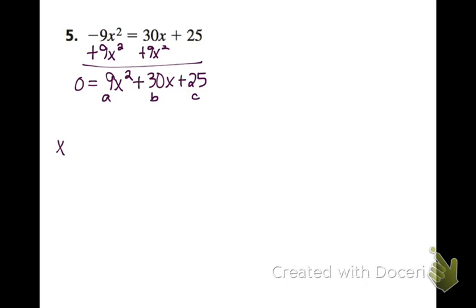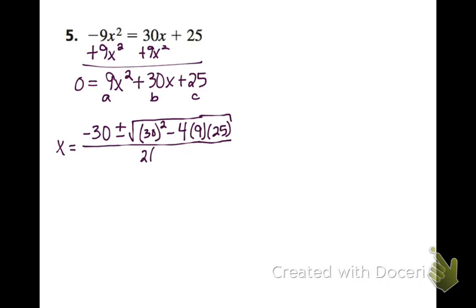So setting this up, we're going to have x equals—first we have negative b, so negative 30—and then plus or minus the square root. I always put my b in parentheses, so 30 squared minus 4 times a times c, all over 2 times a.